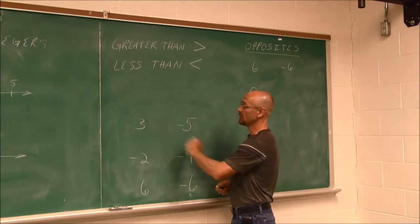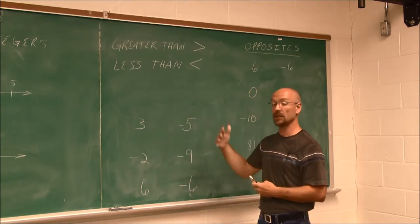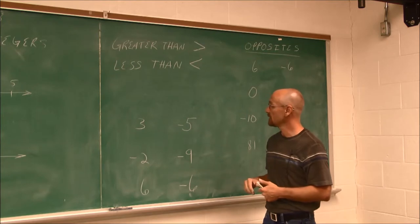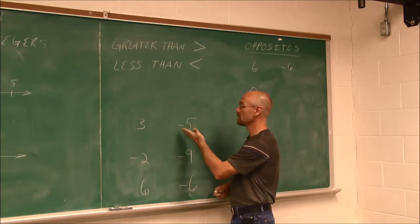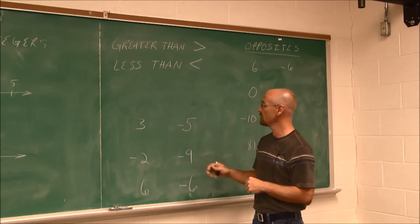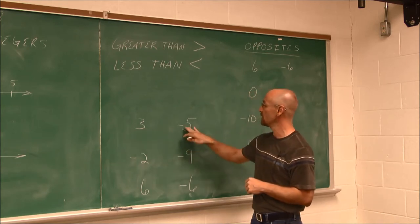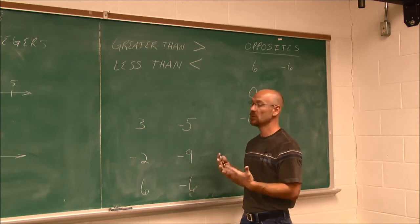One way to remember which value is going to be bigger or smaller is this larger end of this arrow always points to the larger value. The smaller end points to the smaller value. We're going to do some examples. We're going to insert the symbol that is appropriate for these sets of numbers.